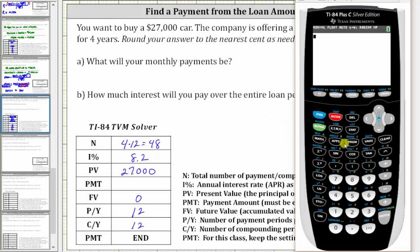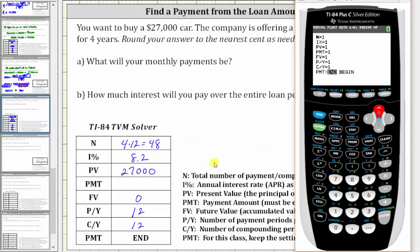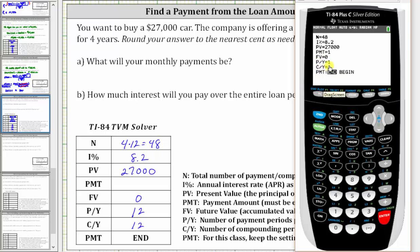Now we go to the calculator. From the home screen, we press Apps, Enter, Enter, and enter the information we have. N is 48, Enter. I% is 8.2, Enter. Present value is positive 27,000, Enter. We are solving for the payment — we'll come back to this, Enter. The future value is zero, Enter. And the number of payment periods and compounding periods per year are both 12.